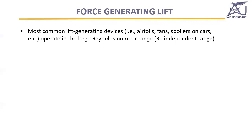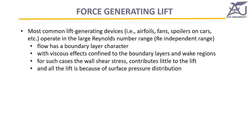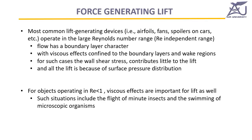Common lift-generating devices include airfoils, fans, spoilers on cars, airfoils for airplanes, wind turbines, gas turbines, steam turbines, and pumps. These operate in a high Reynolds number range, so the flow has a boundary layer character where viscous effects are not dominant. This is why lift production is mainly pressure-based. There are flows with Reynolds number less than 1 — such as very small insects in flight and microorganisms in water — where shear stress is important for lift.